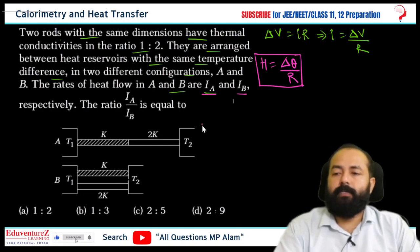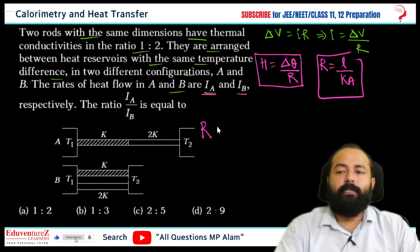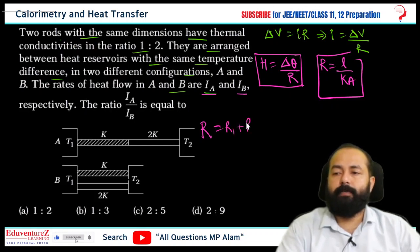So basically if we look at the first condition, the formula is L by KA. Thermal resistance is L by KA. So if we look at the first condition, total resistance is R1 plus R2. And the second condition, total resistance is parallel: R1 R2 divided by R1 plus R2.